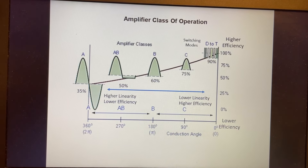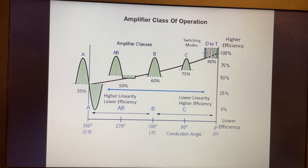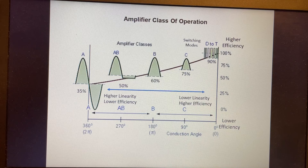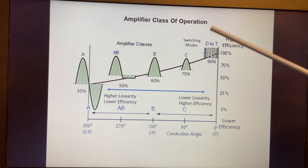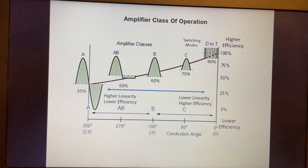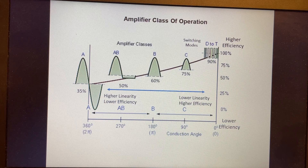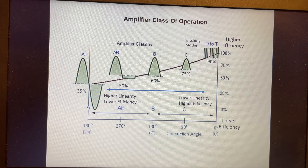This chart shows the different amplifier classifications — class A through class C, and then the digital modes which start with D and E, F, and beyond. This presentation will focus on class E and compare it to a class B amplifier. That's the primary objective here.